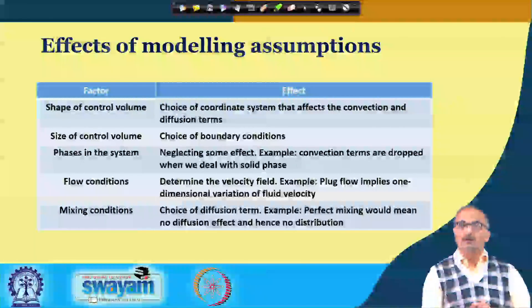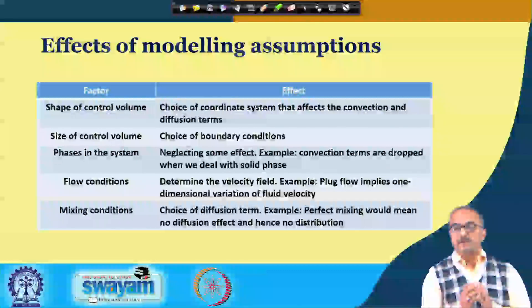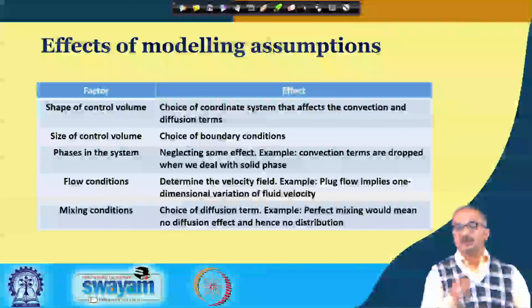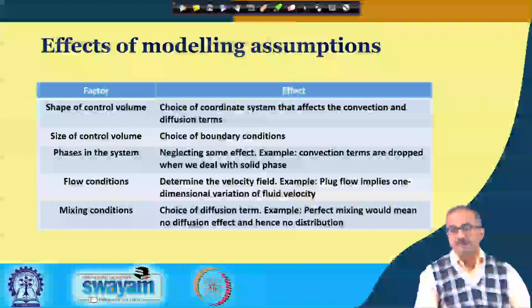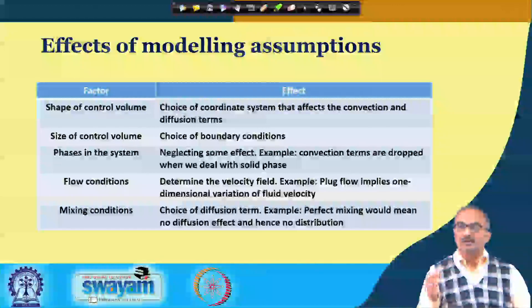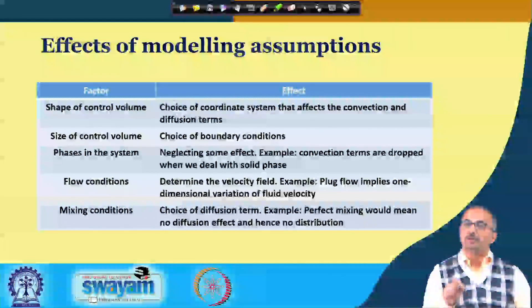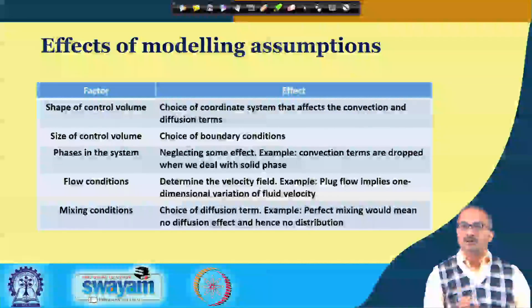This point I also explained in an earlier lecture, when I told you that suppose you have a sphere — in the sphere we define generally two boundaries, one at the center and one at the periphery. But in actuality there is only one boundary, that is at the periphery of the sphere. So for mathematical purposes, we define two boundaries for the control volume. Depending on what you want to study and in what region, you choose the appropriate shape of the control volume and the appropriate coordinate system.